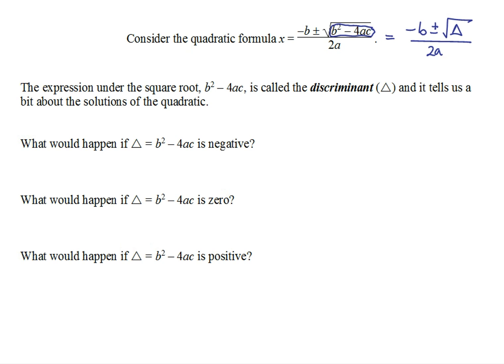Thinking about the specific cases: if we had a negative discriminant — if what was under the square root was negative — we know that we can't take the square root of a negative, so we would get no solutions. We would have x equals negative b plus or minus the square root of something negative, all over 2a, and this is a problem. So we're going to get no solutions if our discriminant is negative.